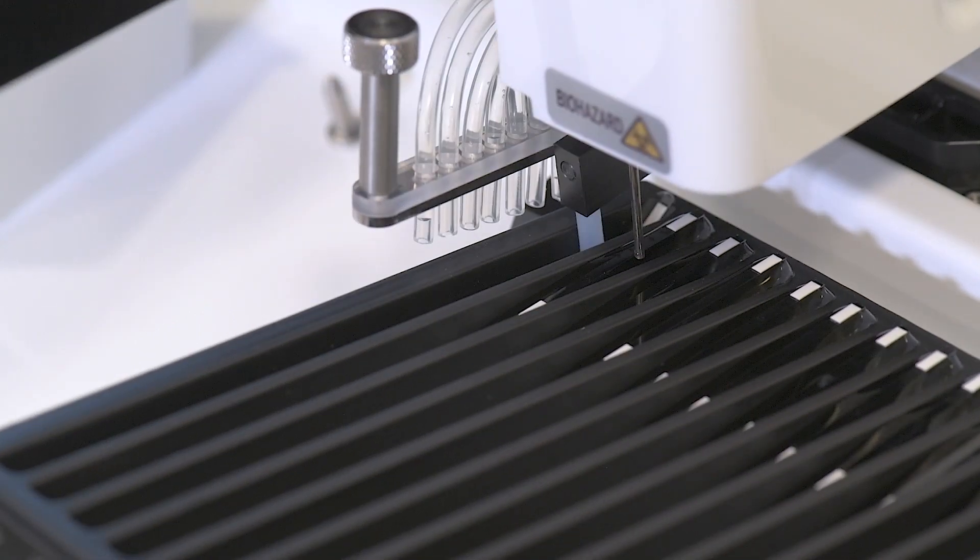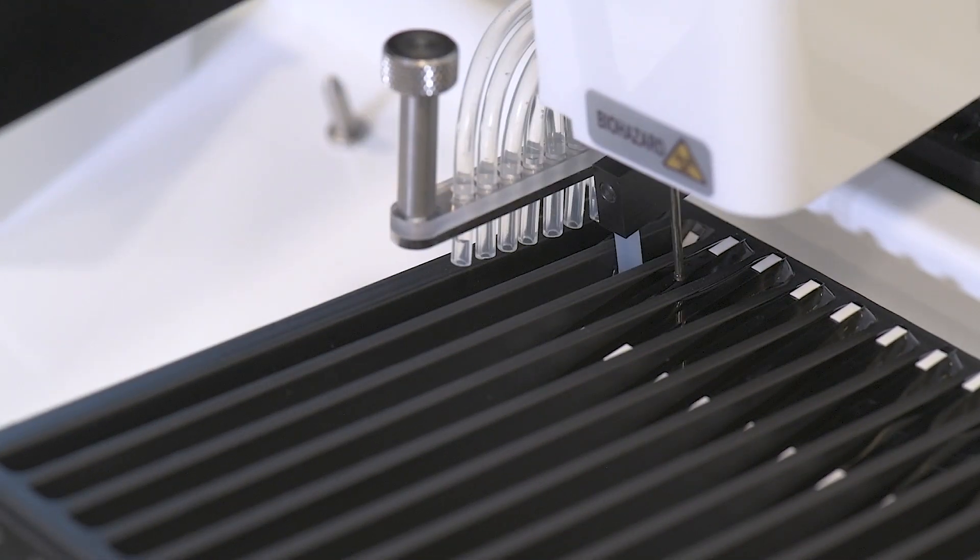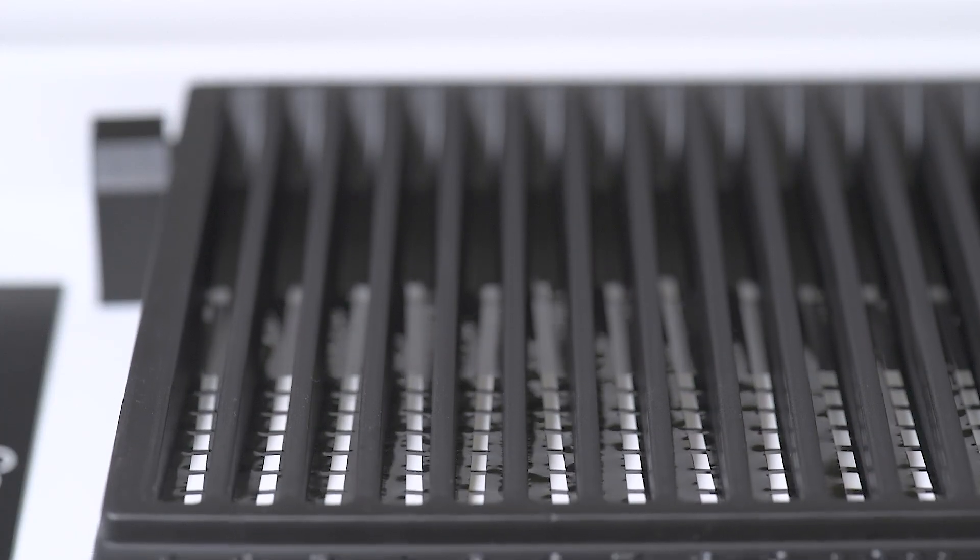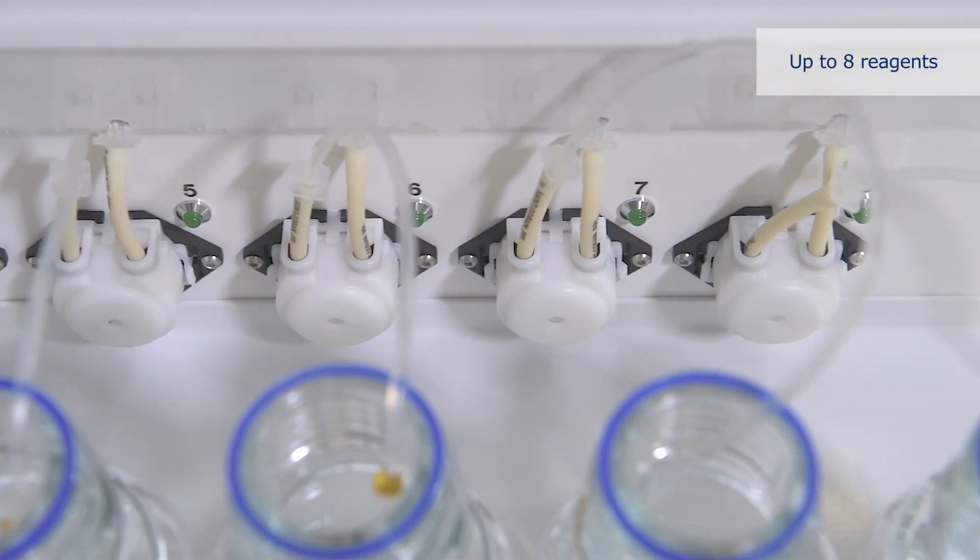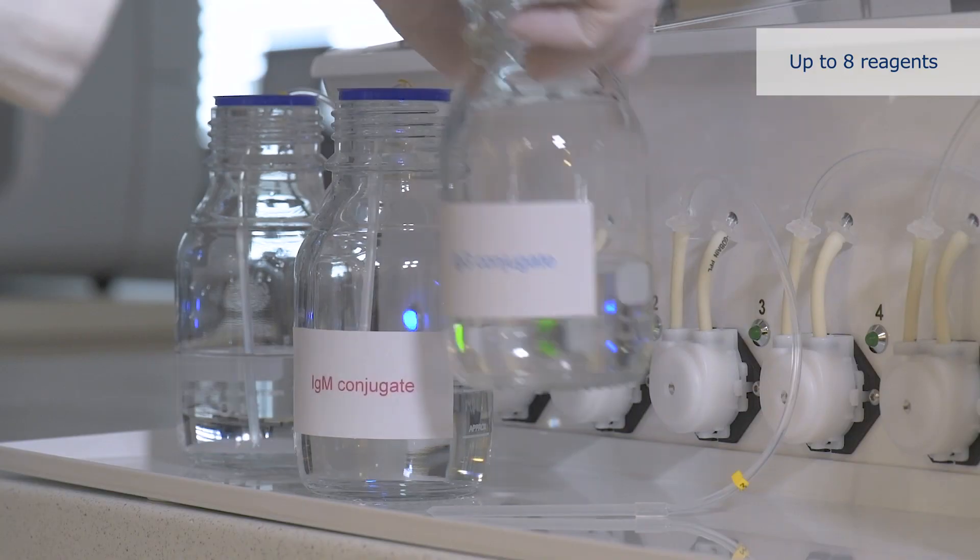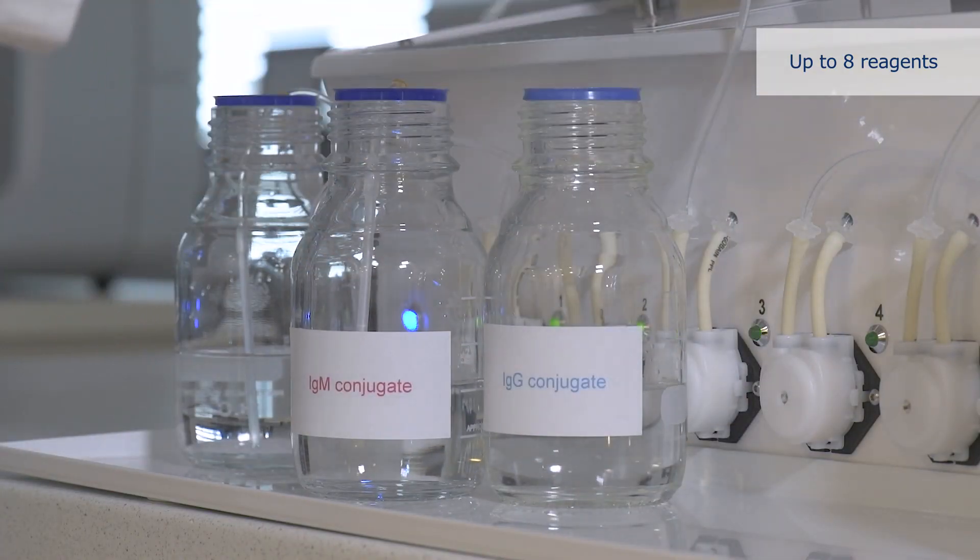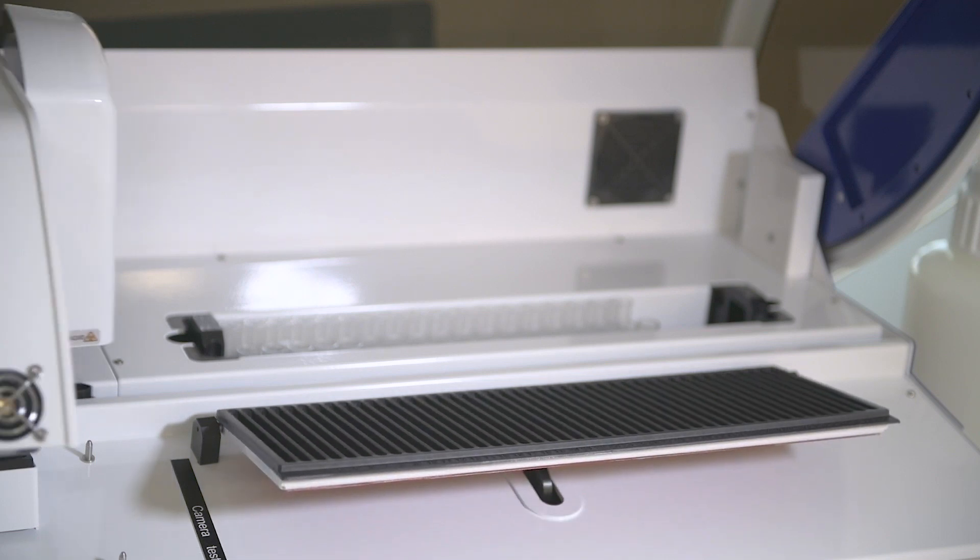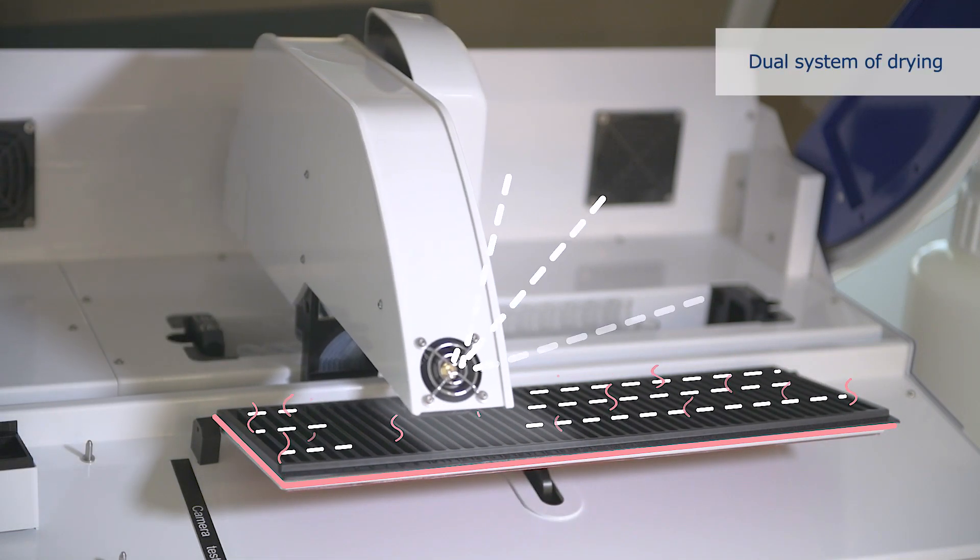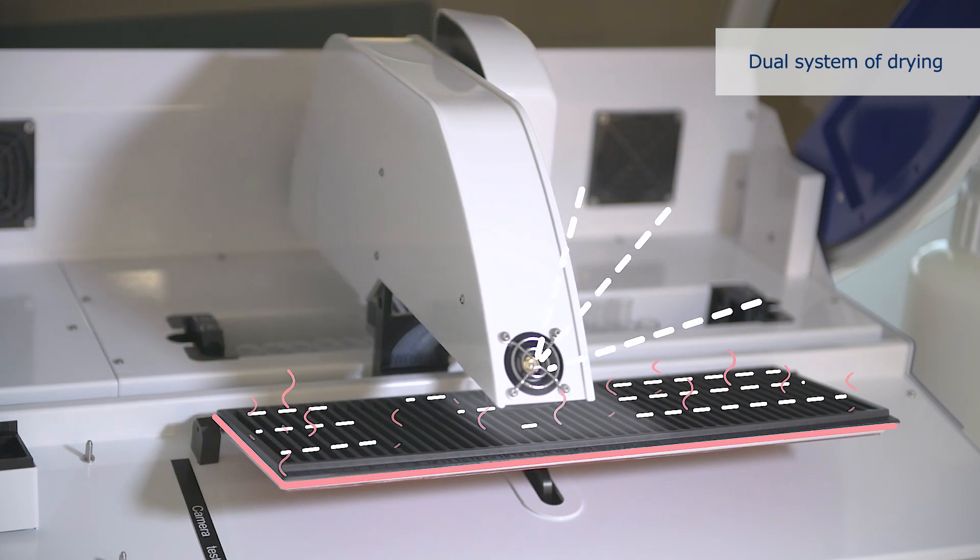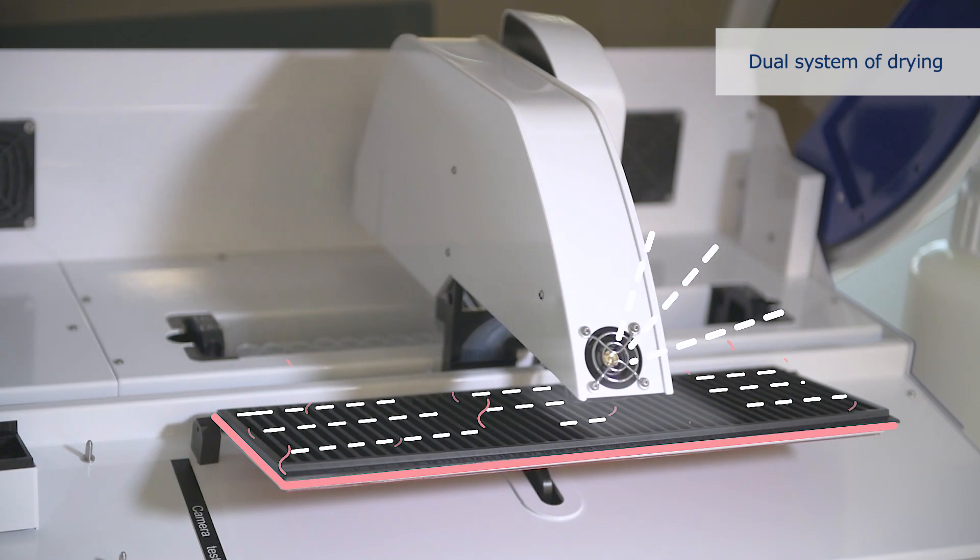DynaBlot Automatic performs all dispensing and washing steps as well as incubating assisted by rocking. Multiple conjugates or other solutions can be combined allowing it to run several types of tests simultaneously. After finishing processing of the strips, the drying time is significantly shortened due to the combination of forced air convection and heating of the tray holder.